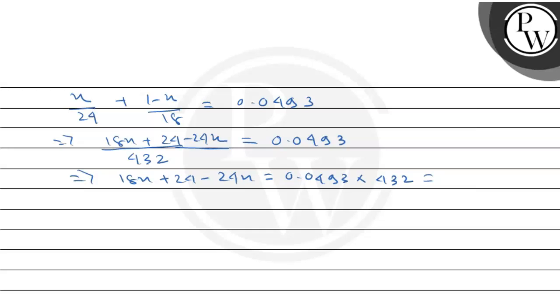This implies that 18x plus 24 minus 24x equals 0.0493 into 432, which is 21.29. So minus 6x is equal to 21.29 minus 24, which equals minus 2.7024. Eliminating both minus signs, x equals 2.7024 divided by 6, which is 0.45.